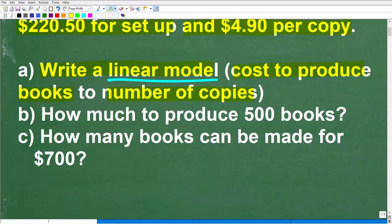You want to construct a model using algebra to have a general equation or formula that describes the total cost of books to the number of copies that you want. The second part of this question is, how much will it cost to produce 500 books? And then part C, how many books can be made for $700? So $700 is your budget to produce books. How many books could you produce?